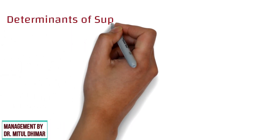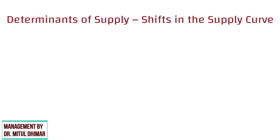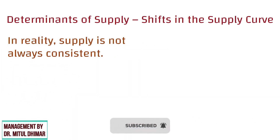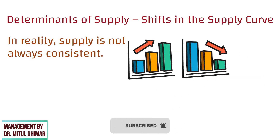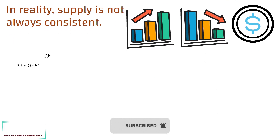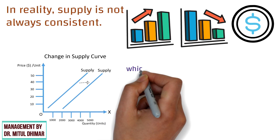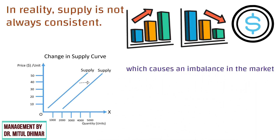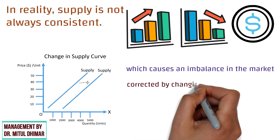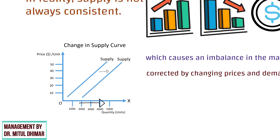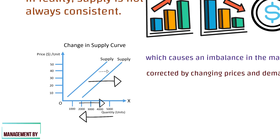Determinants of supply — shift in the supply curve. In reality, supply is not always consistent; it can increase and decrease independent of price. A change in supply leads to a shift in the supply curve, which causes an imbalance in the market that is corrected by changing prices and demand. An increase in supply shifts the supply curve to the right, while a decrease in supply shifts the supply curve to the left.